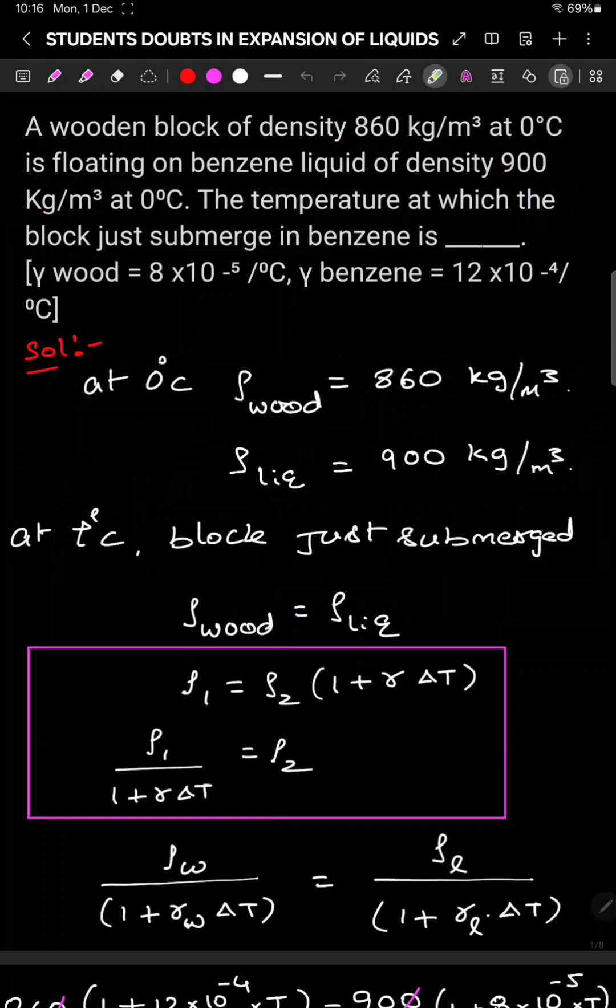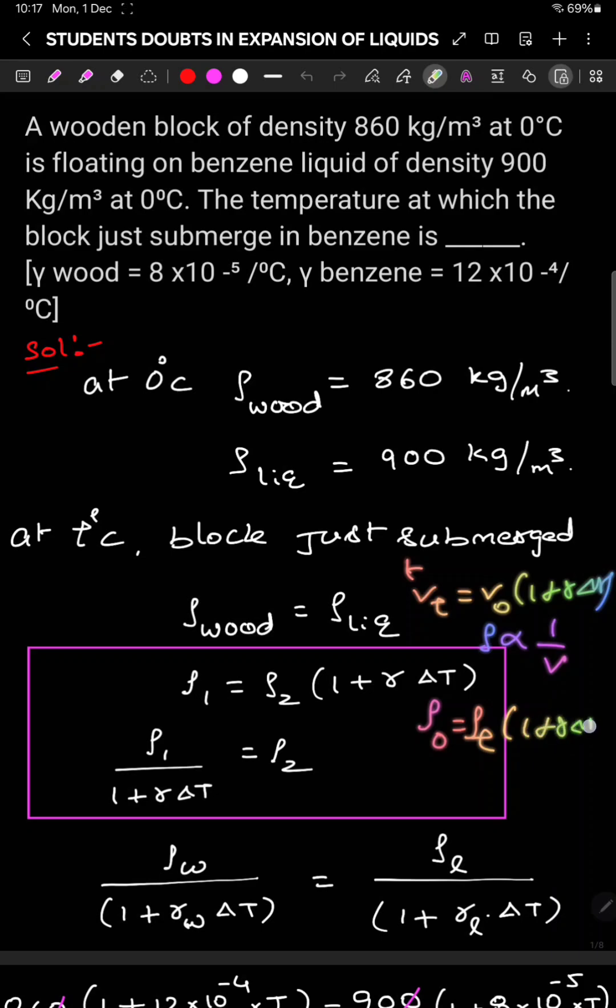To find density formula we should know at t degree Celsius, volume formula will be V₀ into 1 plus gamma delta t. We know density is inversely proportional to volume. Then this becomes ρ₀ equals ρₜ into 1 plus gamma delta t.